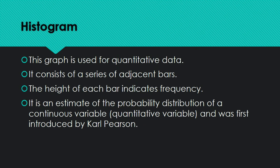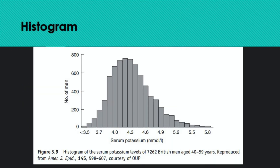The third category is charts for continuous data. The first thing that comes to mind is the histogram. The histogram is used for quantitative data. It consists of a series of adjacent bars. The height of each bar indicates the frequency — same as a bar chart — but it is an estimate of the probability distribution of a continuous variable. This was first introduced by Karl Pearson. Now, how do we plot it?